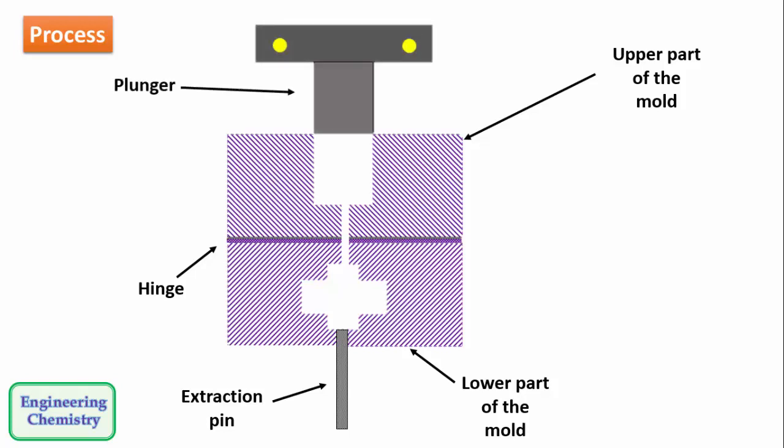Then it has plunger at the top. The plunger is used to push the liquid polymer charge into the mold cavity under pressure. Then it has heater to melt the polymer materials or additives which are used for the fabrication process.